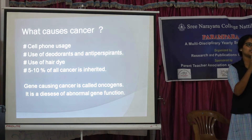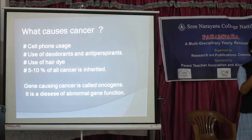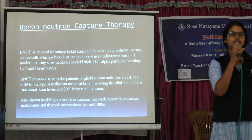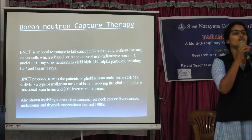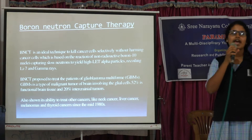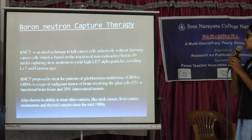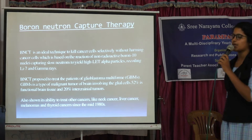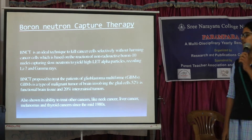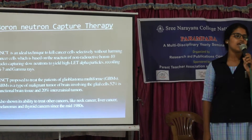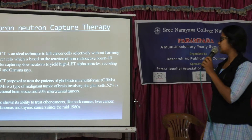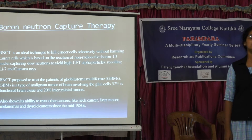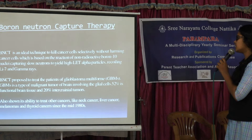I am Sreekutty from Second Year Chemistry, and I am here to continue the rest. BNCT, Boron Neutron Capture Therapy, is an ideal technique to kill cancer cells without harming normal cells. It is based on the reaction of non-radioactive boron-10 with slow neutrons to yield high-LET alpha particles, recoiling lithium-7 ions, and gamma rays. BNCT was first proposed to treat Glioblastoma Multiforme (GBM), a kind of tumour found in the brain involving the glial cells. BNCT has also shown its ability to treat many cancers like thyroid cancer, liver cancer, melanomas, etc.